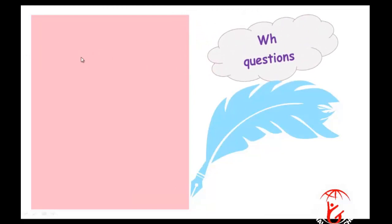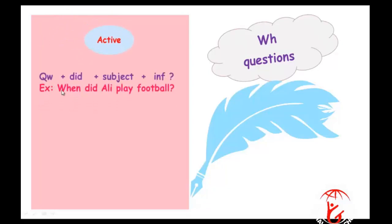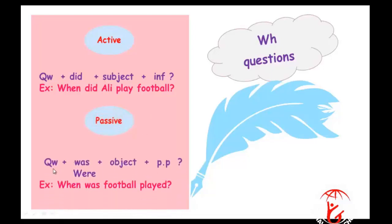Now WH questions. The form is the same as yes/no questions — you only add the question word at the start. The active form is: question word plus did plus subject plus infinitive — for example, 'When did Ali play football?' The passive form is: question word plus was/were plus object plus past participle — for example, 'When was football played?'